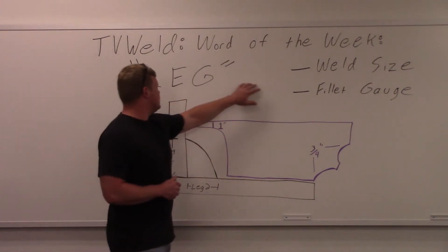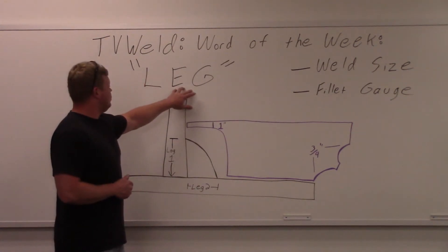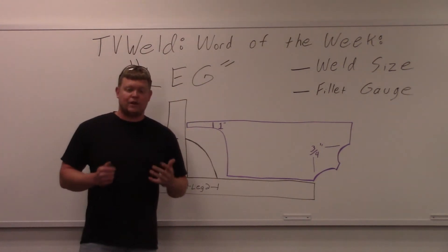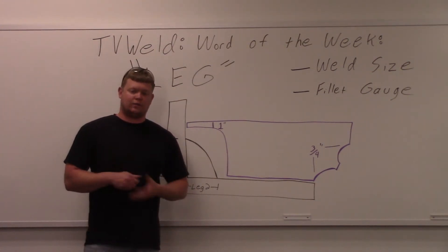Weld size is based off of the leg, so when you look at a fillet weld and there's a weld size for that, you're measuring the actual leg of the weld. That's why it's so important to know where the leg is on a fillet weld.